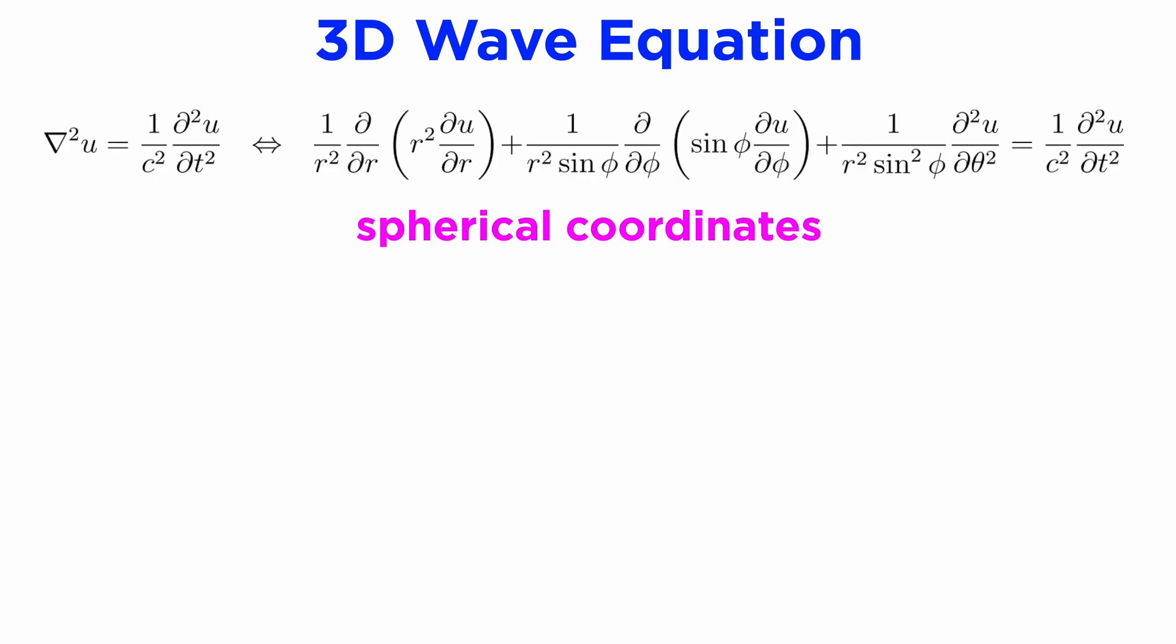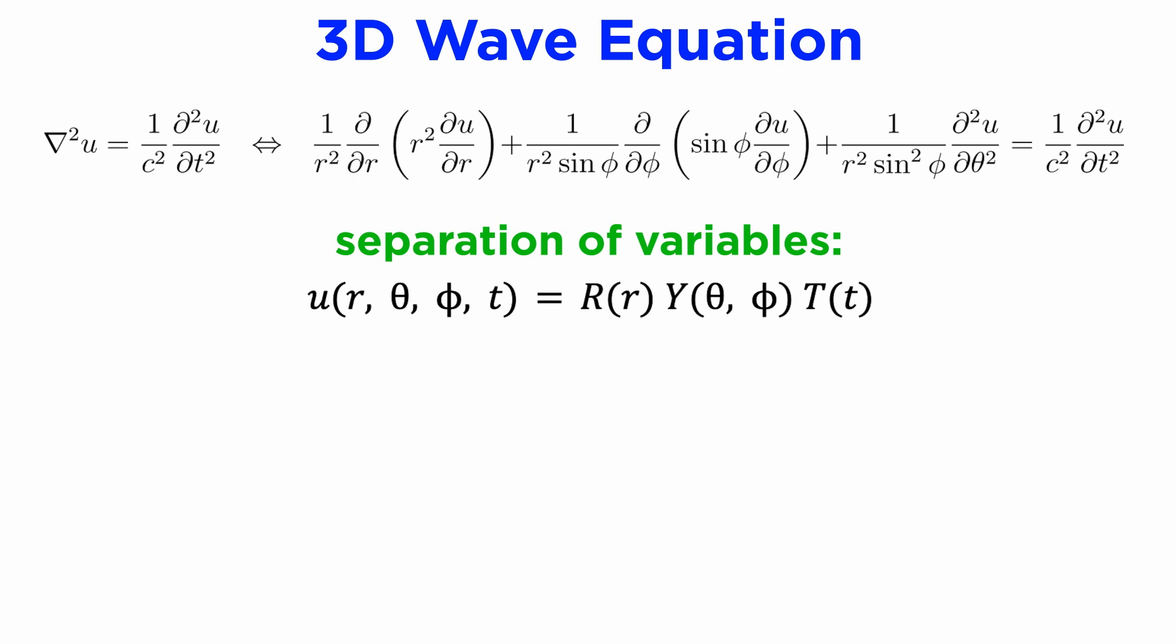But we can also study waves in spherical coordinates, and this brings some interesting applications in itself. The formula for the Laplacian in spherical coordinates is quite intimidating, but it can be tackled using separation of variables just like before. If we make the choice to keep the two angular components, we end up with three Sturm-Liouville problems, a radial component, an angular component, and a temporal component.